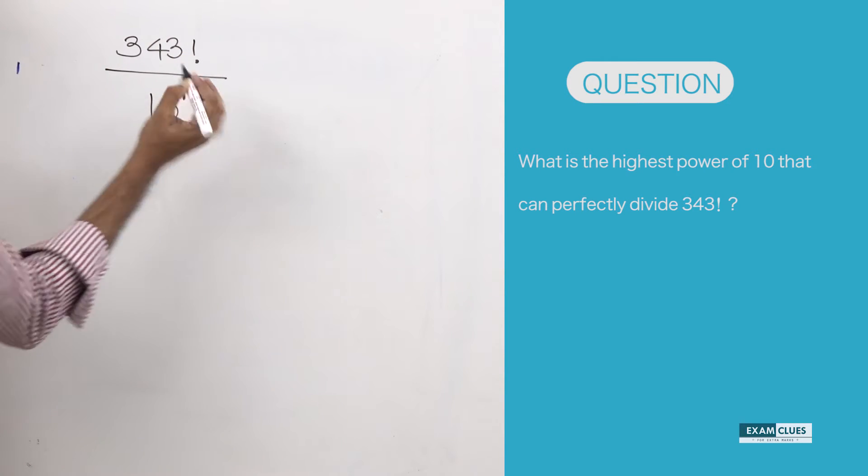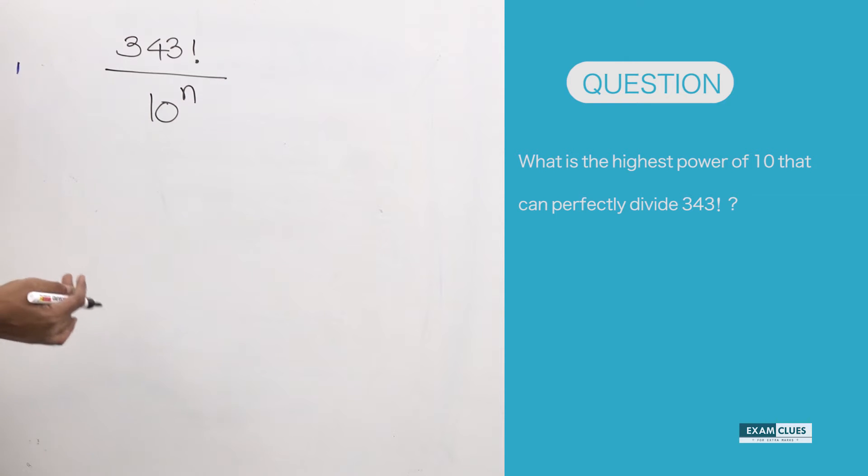You already know that a number would be divisible by 10 when it has a zero at the end. If there are two zeros, it would be divided by 10 squared. If there are three zeros, it would be divided by 10 cubed. So all we need to figure out is how many zeros would be there as the last digits for 343 factorial.